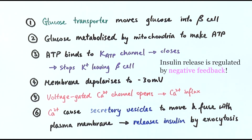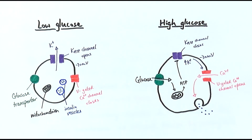Once there is less glucose in the bloodstream, glucose stops entering the beta cells, so less ATP is made. The potassium ion channels can reopen to re-establish the resting potential. And this is the control of insulin secretion by the beta cells.